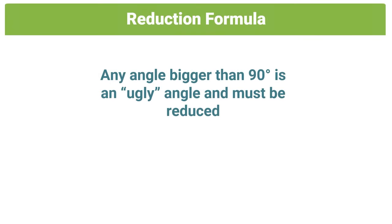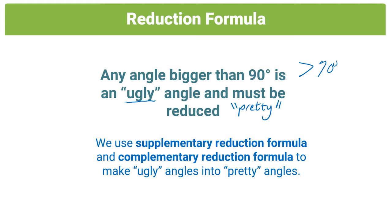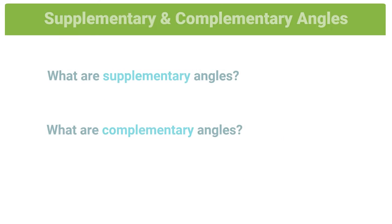In trigonometry, I like to think of any angle greater than 90 degrees as being ugly. Any ugly angle must be reduced into a smaller and more pretty angle. We make use of supplementary and complementary reduction formula to turn these ugly angles, which are greater than 90 degrees, into pretty angles, which are smaller than 90 degrees. So what exactly are supplementary and complementary angles?